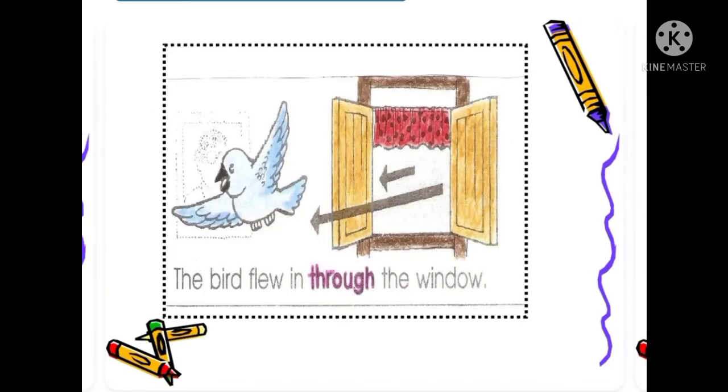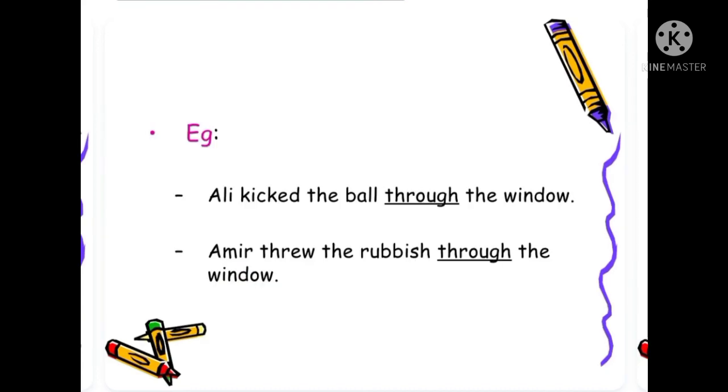The bird flew in through the window. Another example: Ali kicked the ball through the window. Amir threw the rubbish through the window.